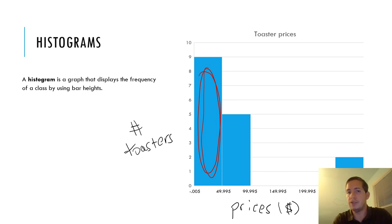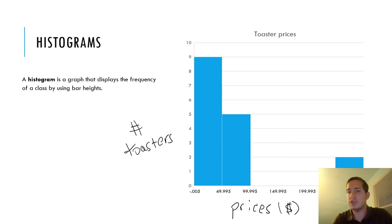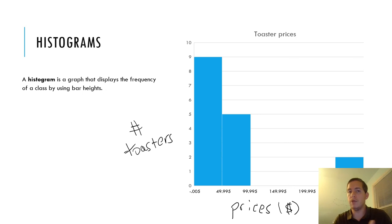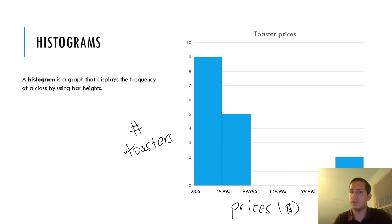You'll notice the bars in a histogram actually touch. This is because at the class boundary — that breaking point — you're moving directly from one class to the next, and that boundary is still a value you could hypothetically land on. The last bar doesn't touch the first two bars, and that's okay because there are no toasters priced between $100 and $249.99. The histogram still gives us a pretty good picture of what's going on.